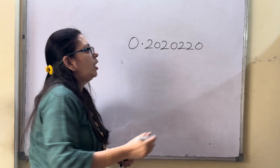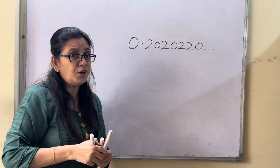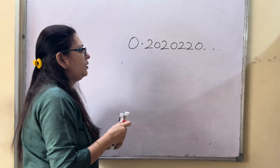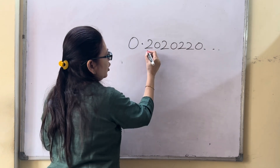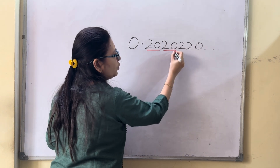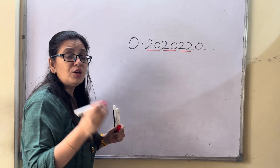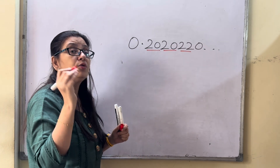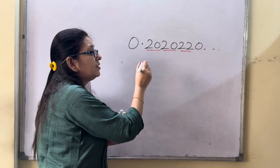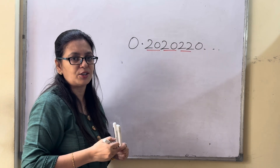How do you check whether a number is rational or irrational? First, you have to understand the pattern. Say the pattern is 2, 0, 2, 0 — that would be repeating. But here the pattern is 2, 2 — so it is non-repeating. All non-repeating numbers are irrational, so this is an irrational number.